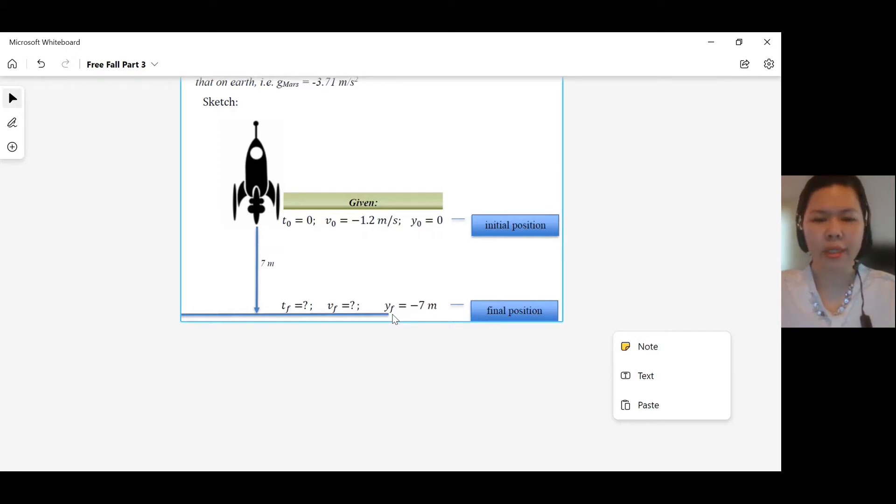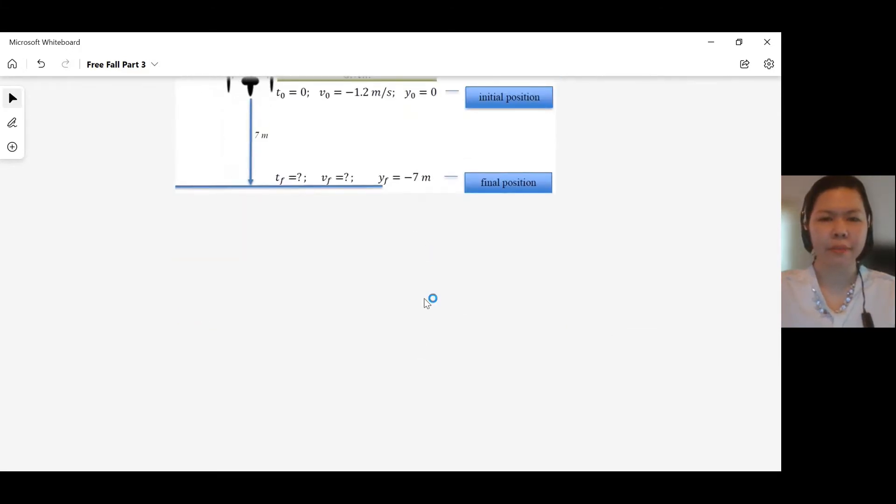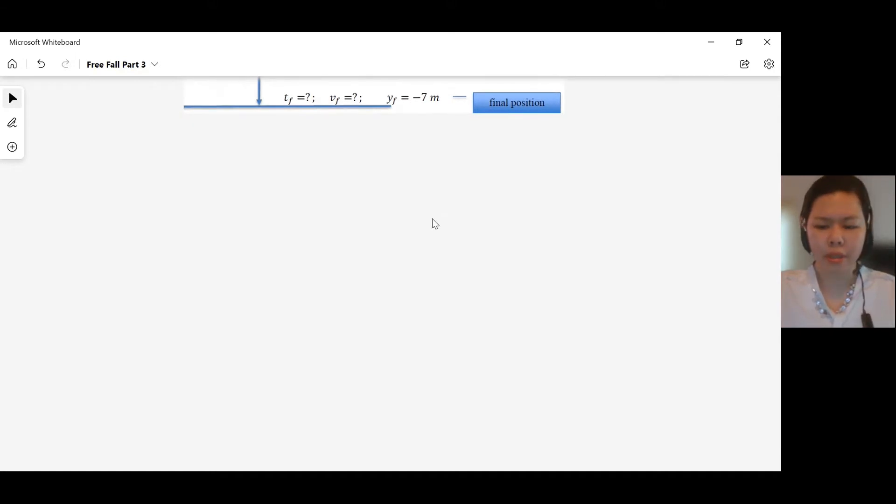Here, we are to find the velocity of the spacecraft, V sub f, at negative 7 meters. Again, we write all the equations. For freefall equation 2.1, 2.2, and 2.3, then we do the checking of the given. And we will choose which equation to use for this problem.